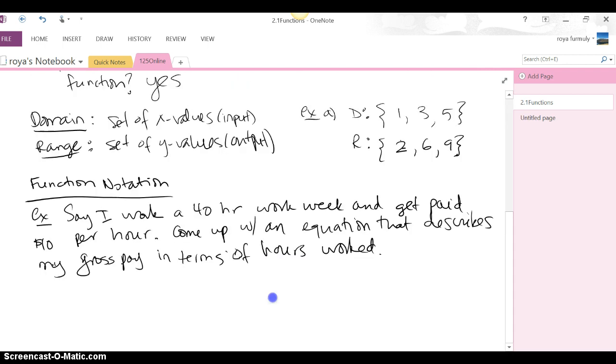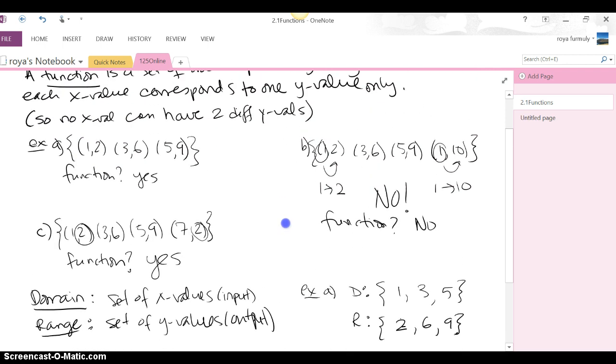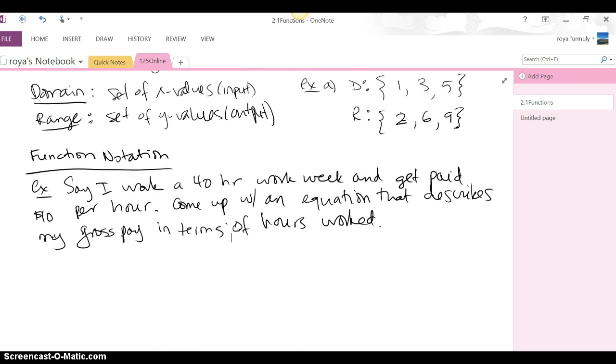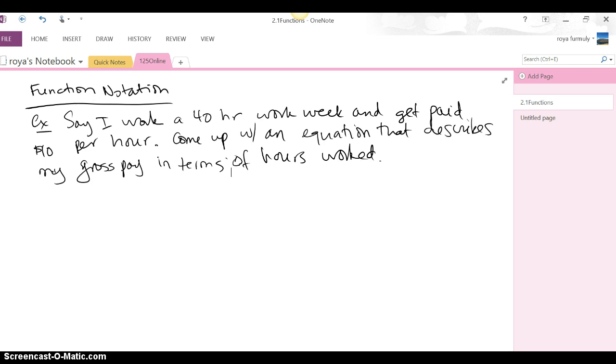Okay, now up above what we looked at was functions in ordered pair form, how to recognize whether a set of ordered pairs is a function or not. Now we're going to go ahead and analyze function notation. Let's say I work a 40-hour work week and get paid $10 an hour. I have to come up with an equation that describes my gross pay in terms of hours worked. So if I work 1 hour, I get paid $10. If I work 2 hours, I get paid $20. And if I keep going and work, let's say, x hours, I'm going to get paid 10 times x dollars.